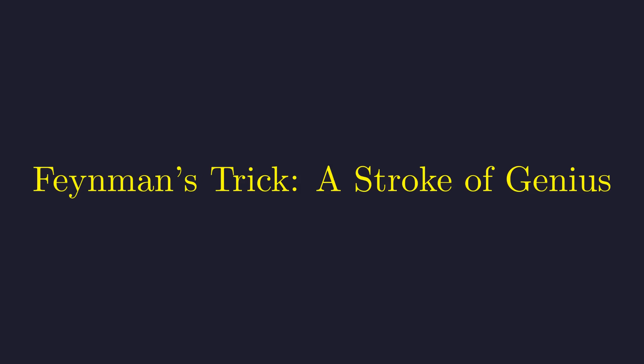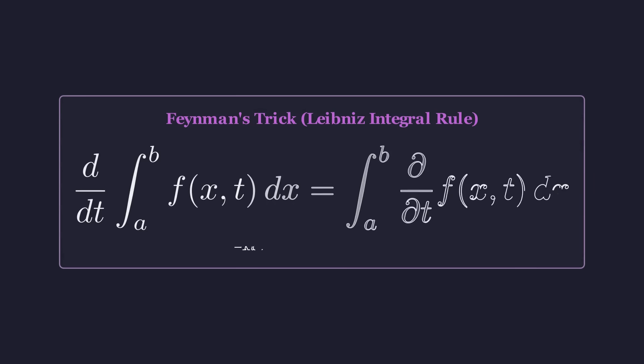The strategy we'll use is a legendary technique known as Feynman's trick, or differentiation under the integral sign. The core idea is to introduce a new parameter, which we can call t, into our integral. This turns the integral into a function of t.